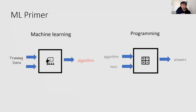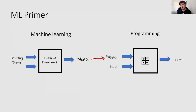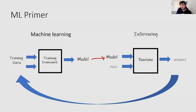In the machine learning world, that's called training data. We use a training framework to spit out a model, and that model you would use for your program — that's called inferencing. We use a machine learning inferencing runtime to spit out an answer. The answers we get are collected as part of our training data as a cycle.